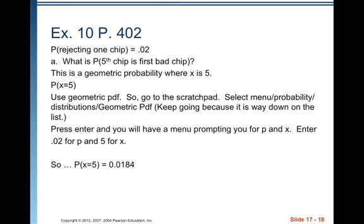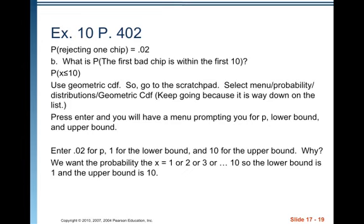Question B asks, what's the probability you find a bad one within the first 10 that you examine? So it might be on the first or the second or the third, all the way up to the 10th. So we're asking, what's the probability the first bad chip is within the first 10, probability X is less than or equal to 10. So now we have an inequality, so we're going to use geometric CDF. We're using geometric because we're still interested in the first bad chip, and we're using CDF because we have an inequality statement.